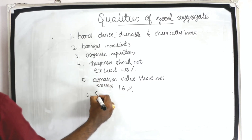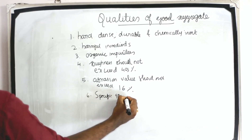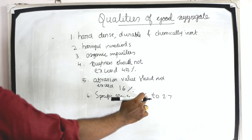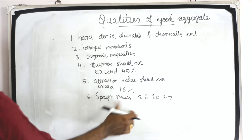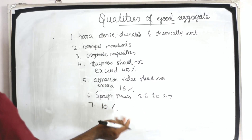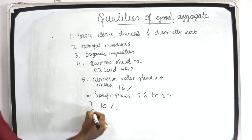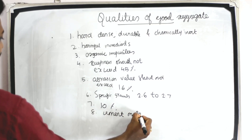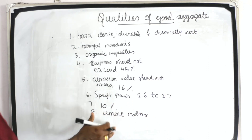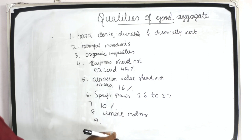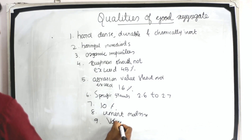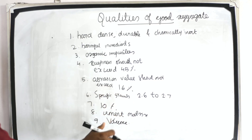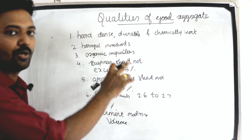Sixth, specific gravity should be between 2.6 to 2.7. Seventh, water absorption should not be greater than 10%. Eighth, thermal expansion should be similar to that of cement matrix. Ninth, aggregate should be sound enough to resist excessive changes in volume. These are the qualities of good aggregate.